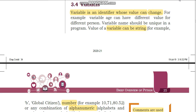Now what is variable? Variable is also an identifier whose value can change. So you can assign a value to a variable within a program. For example, the variable age can have different values for different persons.